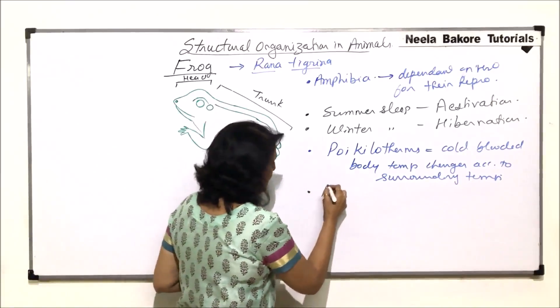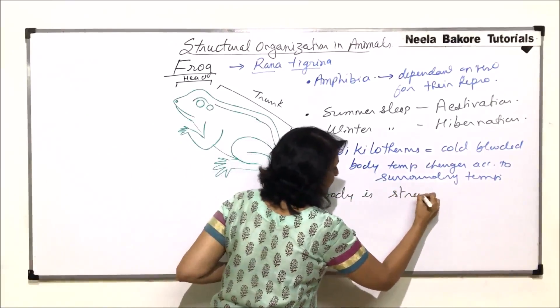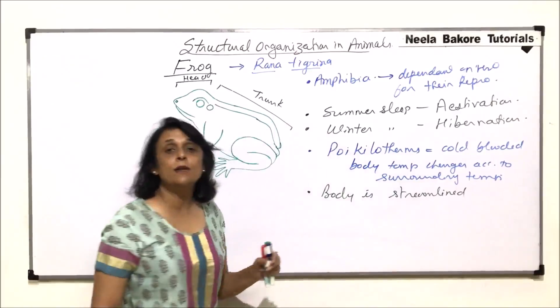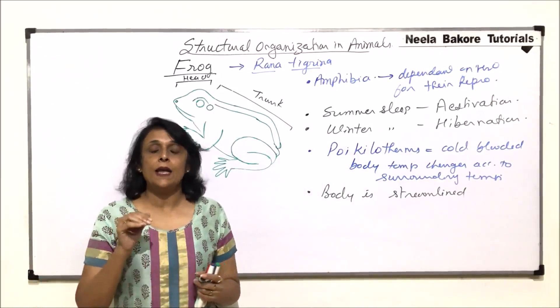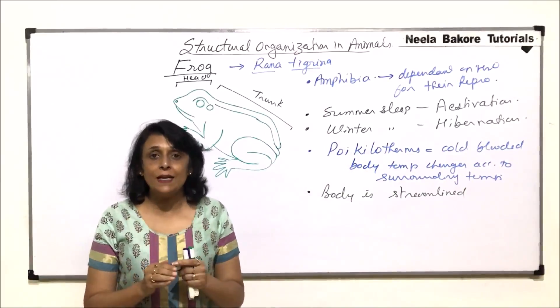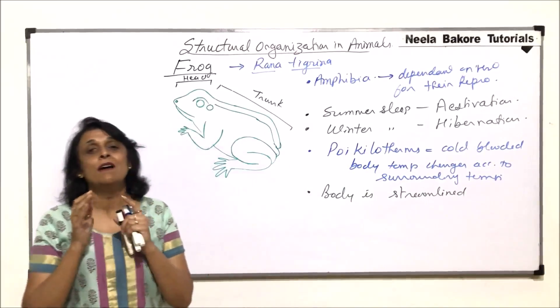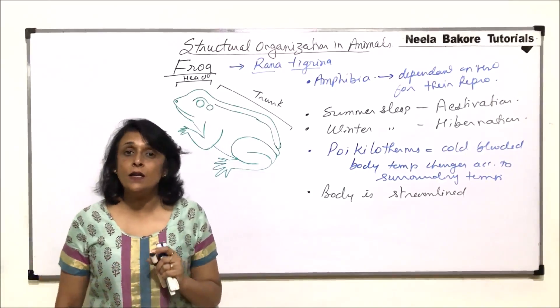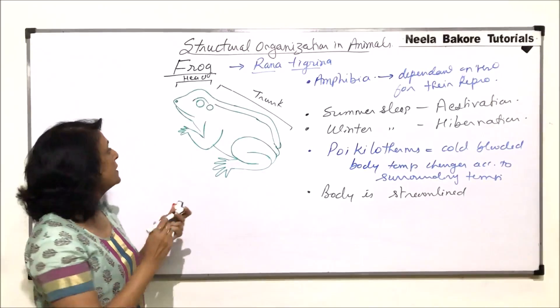They do not have neck. That means the body is streamlined. And the reason for streamlined body is because they have to cut through water. So when an animal has to cut through medium, the body should be streamlined so that there is minimum friction or minimum resistance. So they have streamlined body and for that the neck is absent.